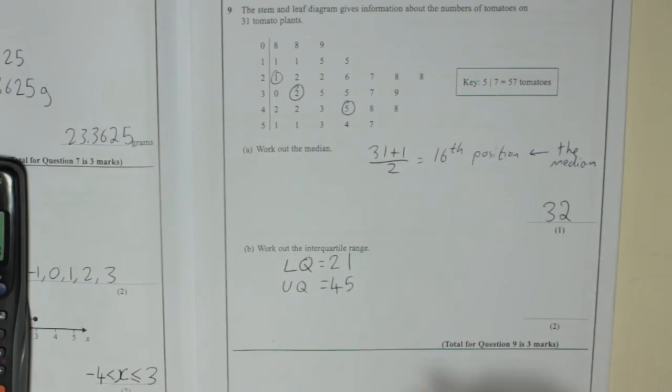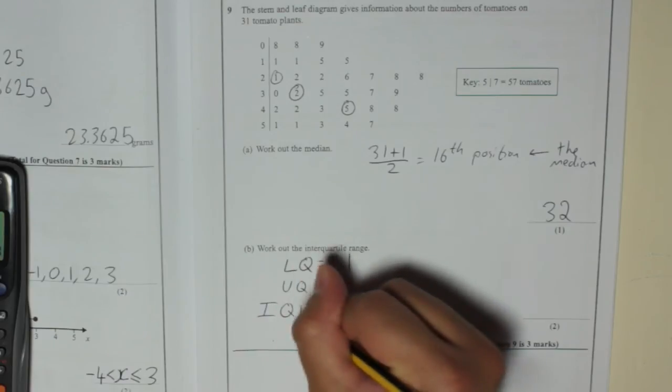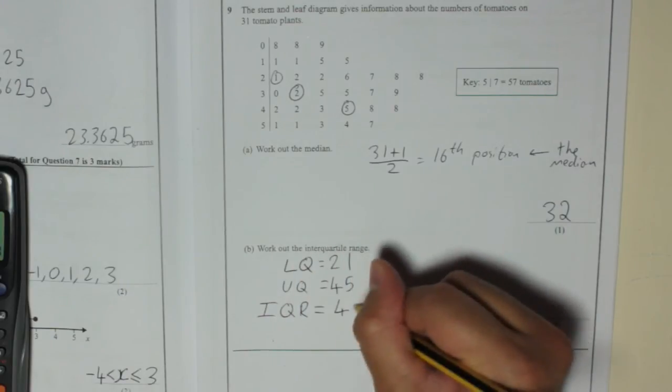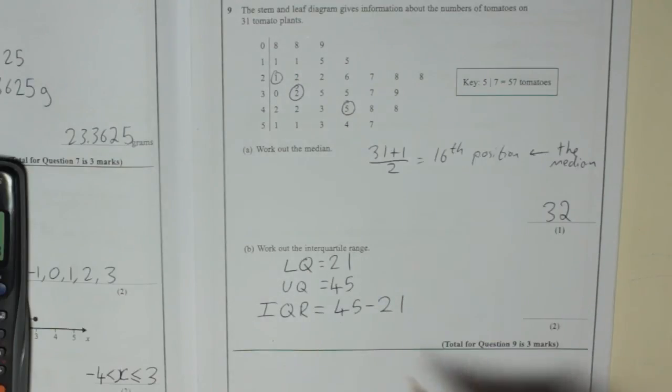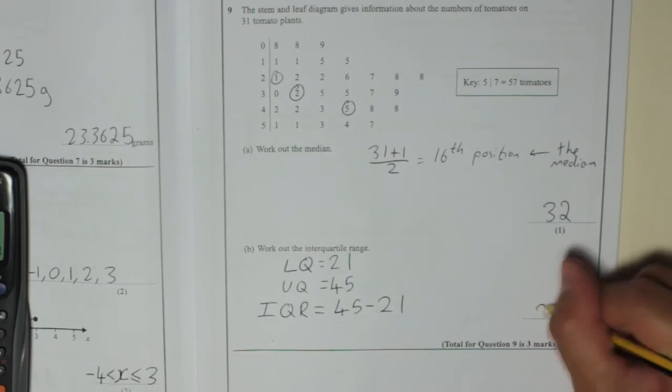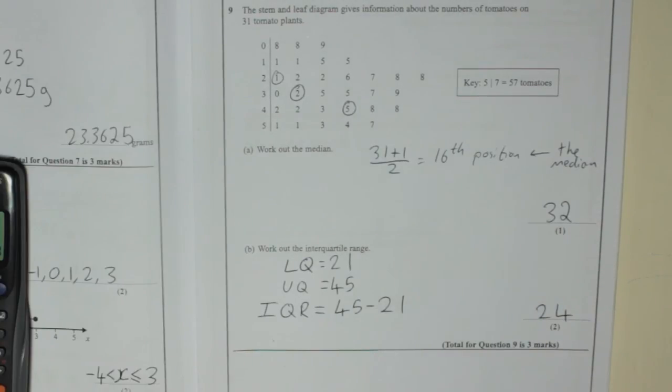So the interquartile range, IQR, is equal to the big one, 45, take away the small one, 21. 45 take away 1 is 44, take away 20 is 24. So that's the interquartile range.